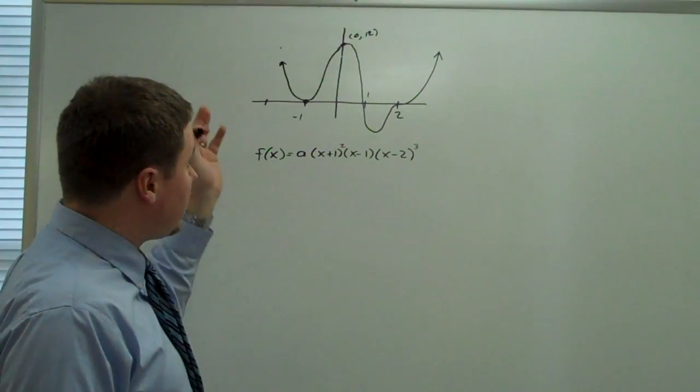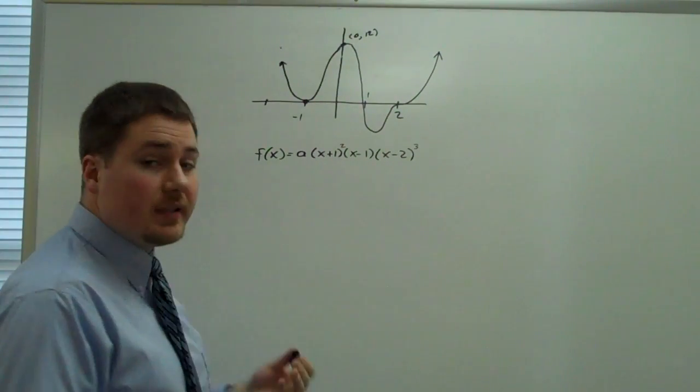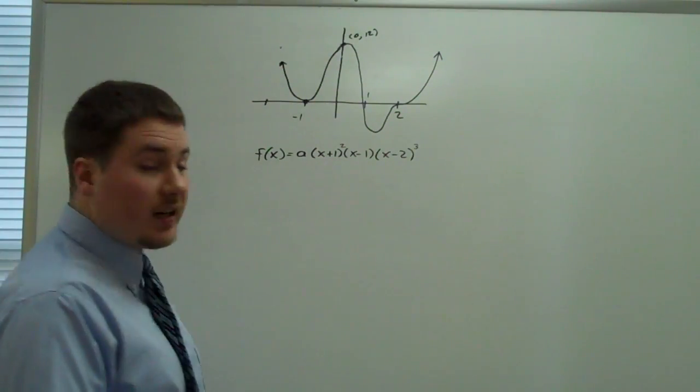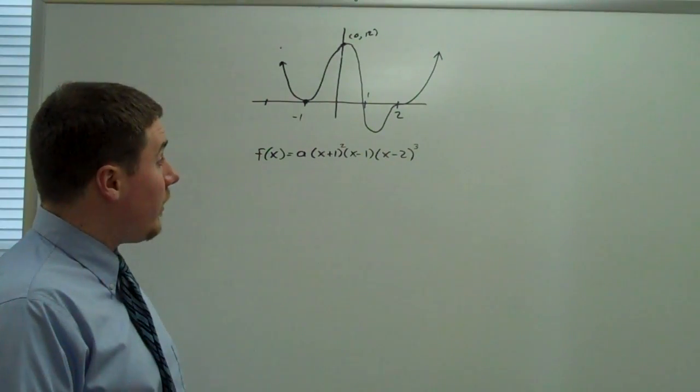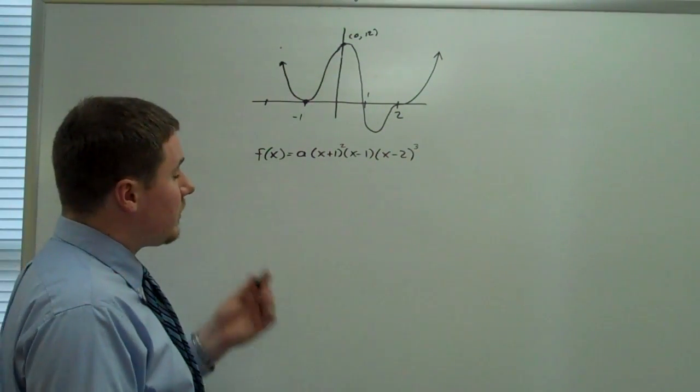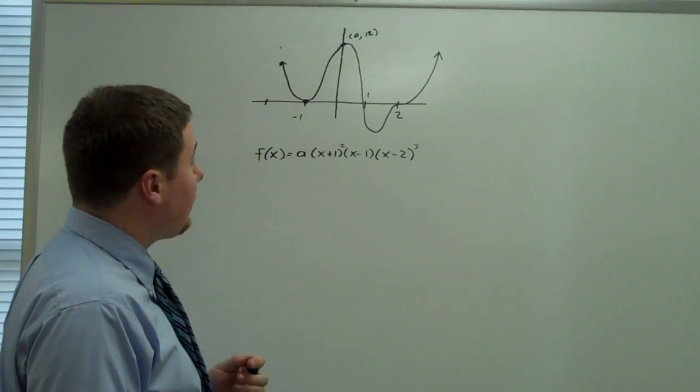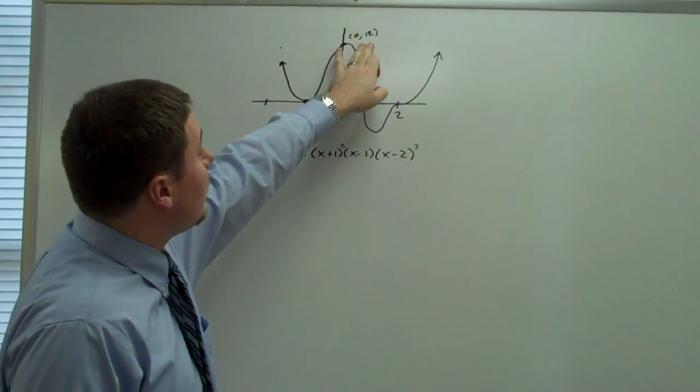Now, taken all that together, that means that this is an x to the sixth, which seems to make sense. It's certainly not an x to the fourth. It could be higher degree, but this is the lowest degree that we could probably make it.